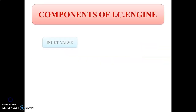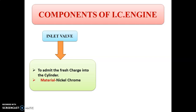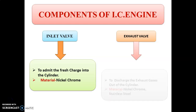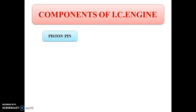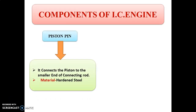The next component is the inlet valve. As the name suggests, the inlet valve is used to admit the fresh charge into the cylinder. The material for the inlet valve is nickel chrome. The exhaust valve: after the exhaust stroke, the gases that remain and are useless are exhausted from the cylinder to the outside by using the exhaust valve. The material used is nickel chrome, stainless steel, etc. The piston pin connects the piston to the smaller end of the connecting rod. The material for the piston pin is hardened steel.